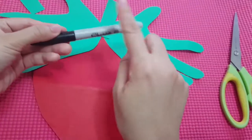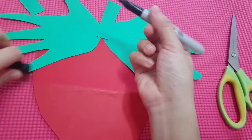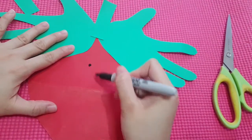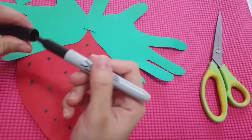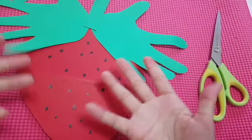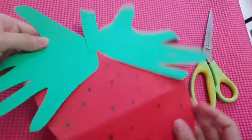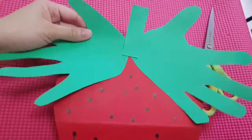Last step is to use the marker and draw some dots inside the strawberry. Ta-da! Now we have our strawberry handprint craft. Well done children!